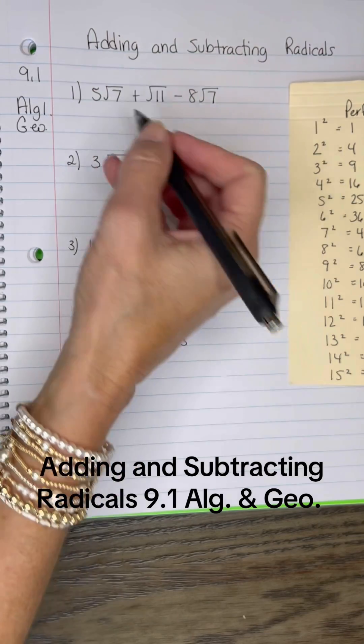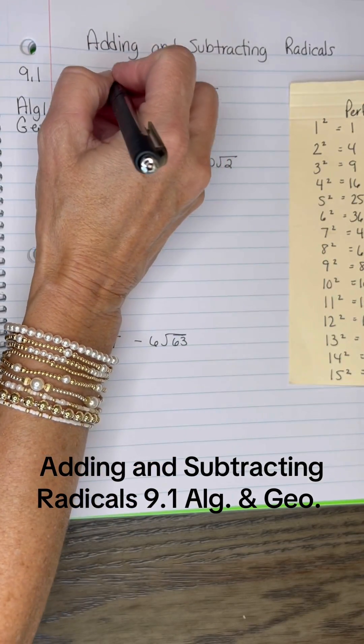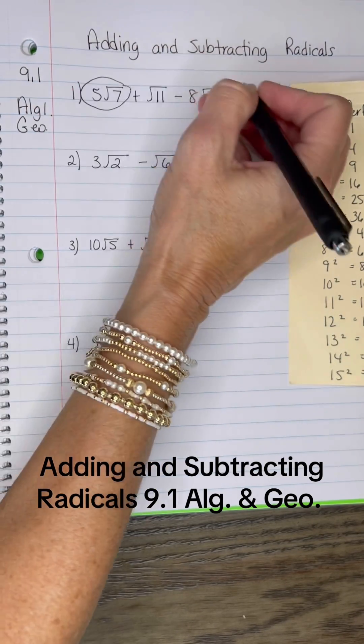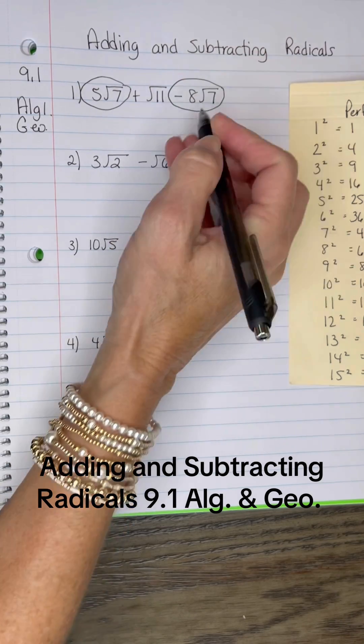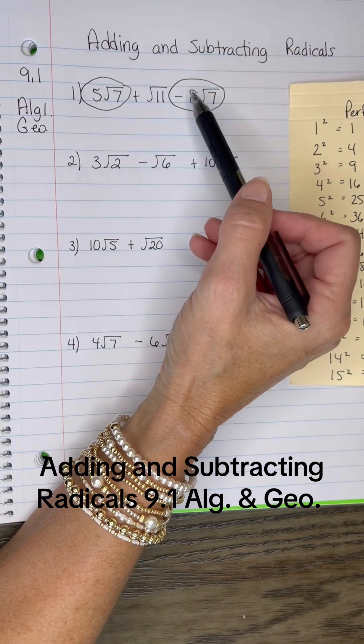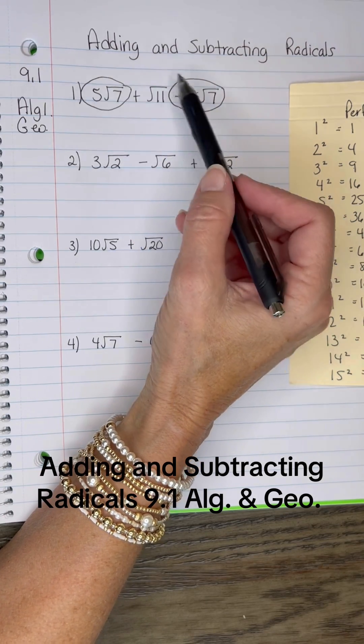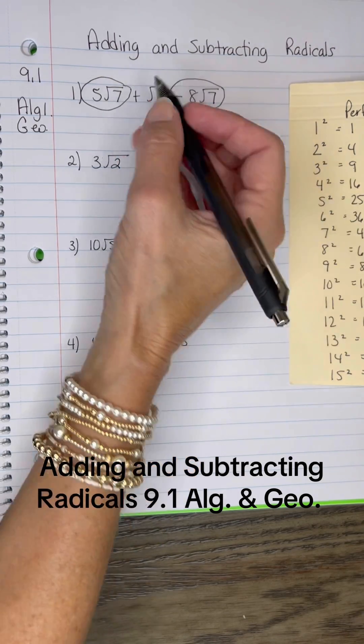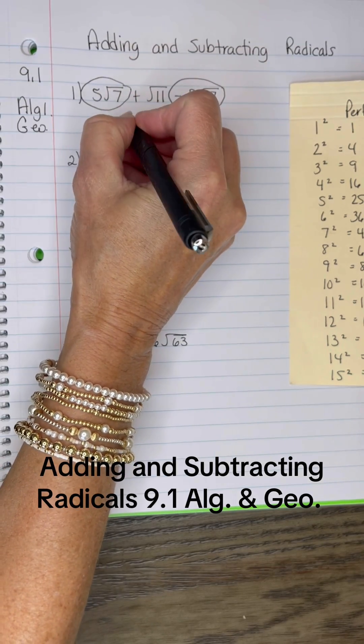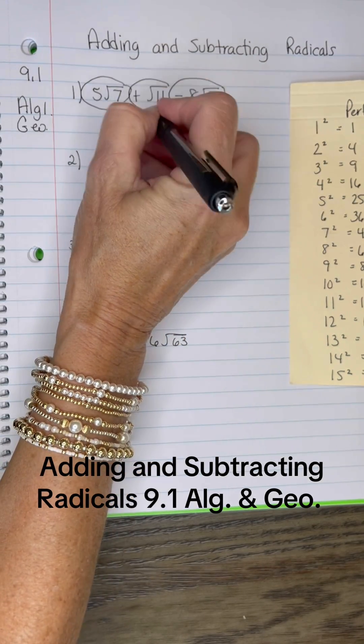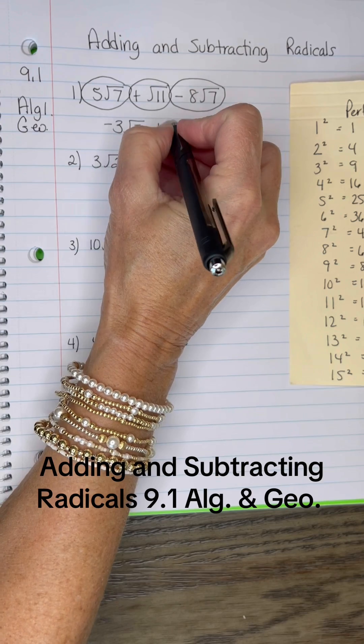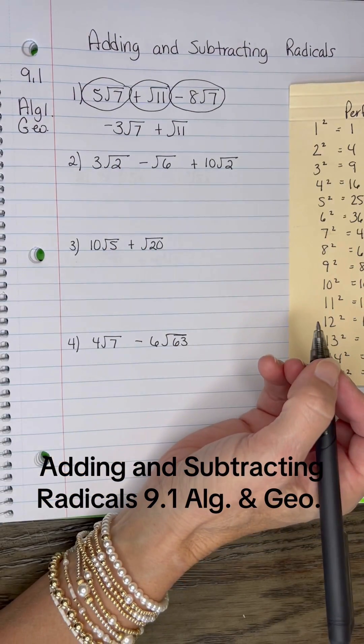I'm going to do it just like those 7s were x's. I'm going to circle the 5√7 and the negative 8√7. I circled the sign in front of it, so that reminds me whether I'm subtracting or adding. Since the radicands are the same, 5 minus 8 is negative 3√7. Now, the √11 has no one to combine with, and you're done at that point.